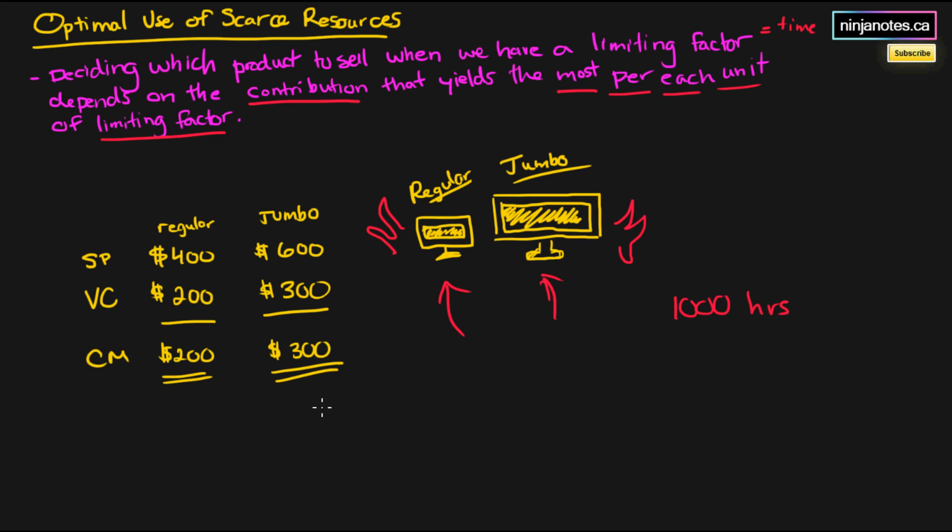The jumbo televisions, we can sell one unit every hour, while for the regular TVs, we can sell two units an hour. Which means that it takes us 0.5 hours to create each unit, and one hour for the jumbo TVs.